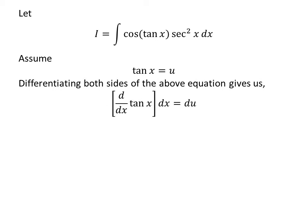Taking the differential of both sides gives us the derivative of tangent of x with respect to x times differential of x is equal to differential of u. As the derivative of tangent of x is secant squared of x, secant squared of x times differential of x is equal to differential of u.